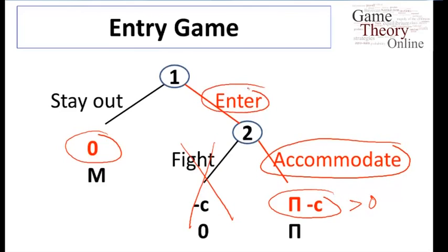The backward induction solution in this particular game is unique. It tells us that player two will accommodate, player one will necessarily enter, so we end up with a prediction of enter and accommodate.